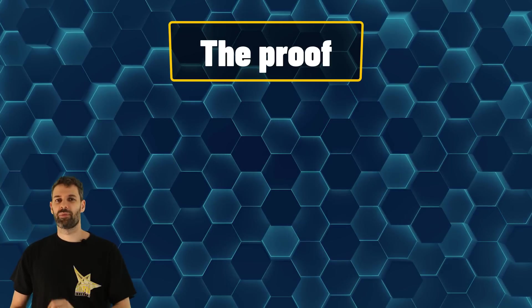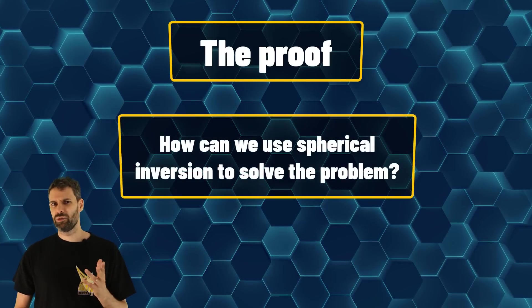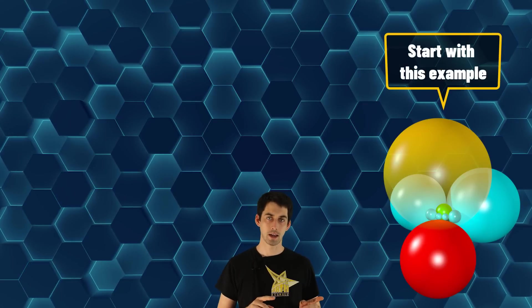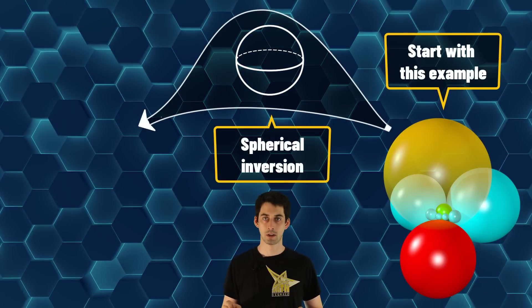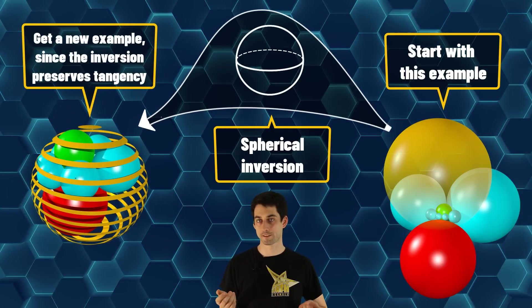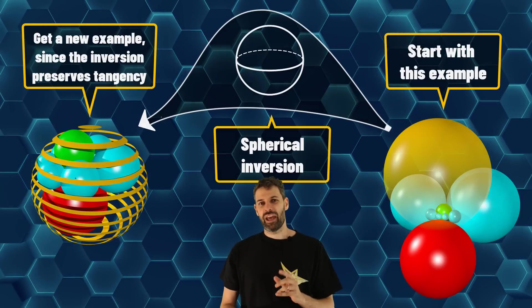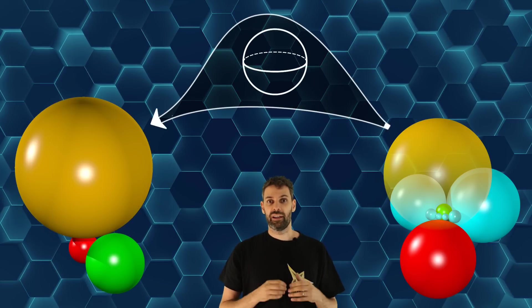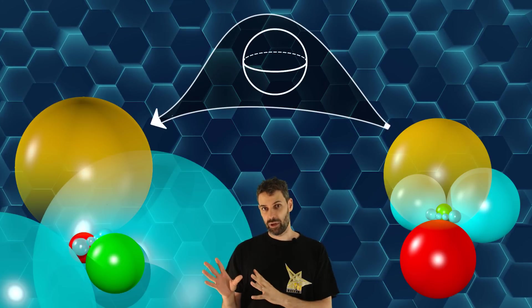Now we are ready to approach the problem. Do you have any idea on how to use inversions? Well, if I start from the example you showed me, I can fix a mirror sphere and do the inversion, and I will get three different initial spheres and still the chain of six blue spheres. Correct. If you know that for a specific position of the three initial spheres, there will be always six spheres in the blue chain, then the same property hold when you transform with a spherical inversion the three initial spheres into a new configuration.